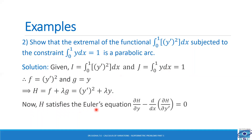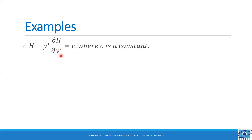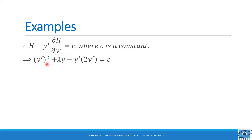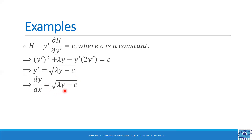For H to be an extremal, it must satisfy Euler's equation. The function H is independent of x, so we use the form: H − y'(∂H/∂y') = c. Substituting, we get y'² + λy − y'(2y') = c, which gives −y'² + λy = c. Solving for y', we get y' = √(λy − c). Since y' = dy/dx, separating variables gives dy/√(λy − c) = dx.